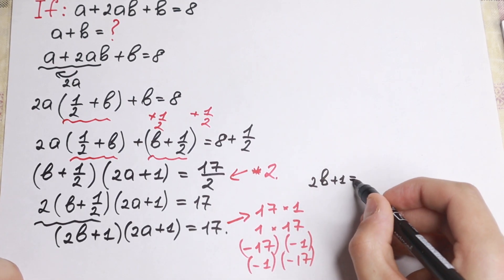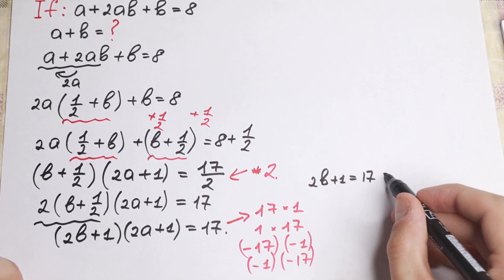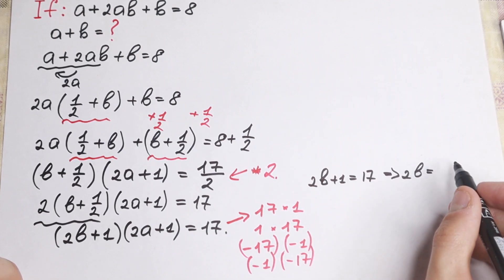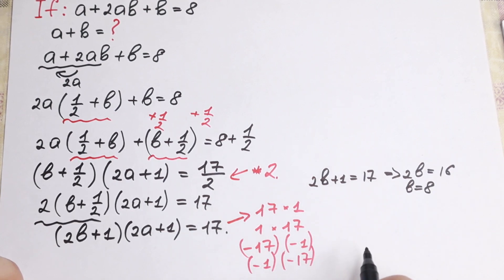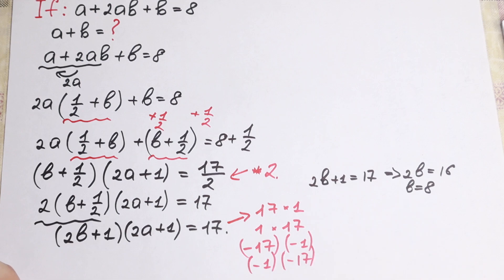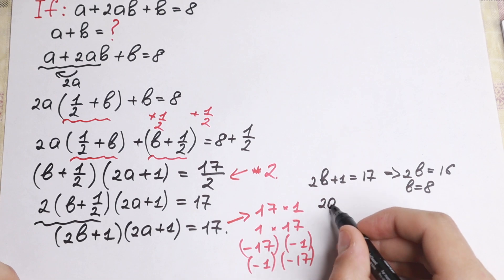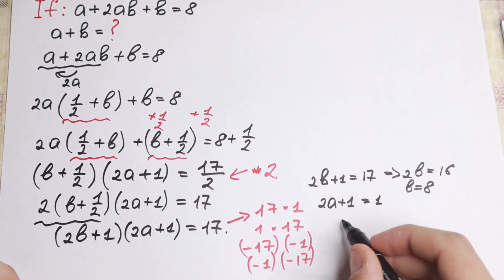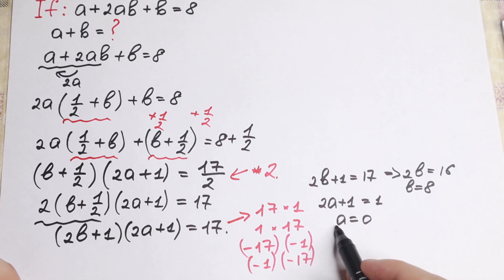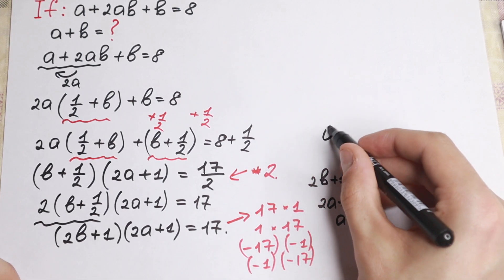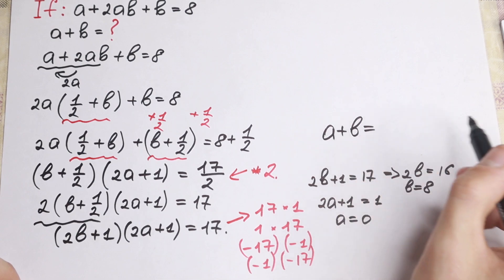If 2b plus 1 equals 17, then 2b equals 16 and b equals 8. And of course our a will be equal to 0, because 2a plus 1 equals 1, so a equals 0. So our first answer: a plus b equals 8.